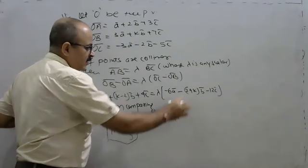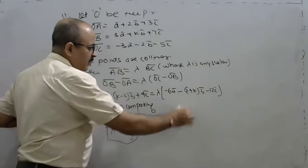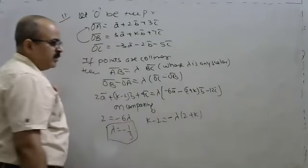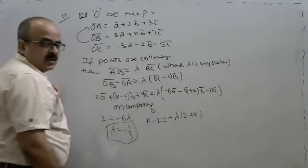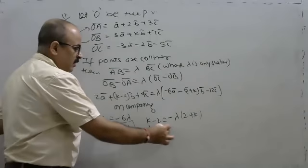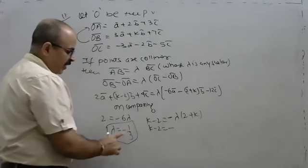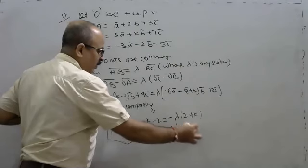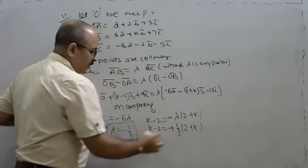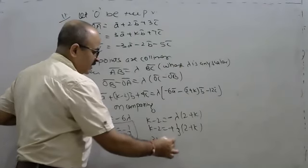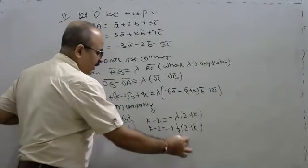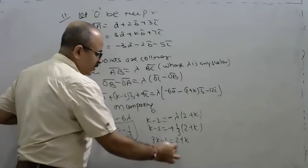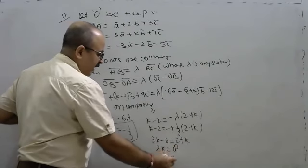So minus 2B plus 3C, K minus 2 is equal to 3 to 5. Then 3K minus 6 equals 2 plus K, so 3K minus 2K equals 2 plus 6, giving K equals 8.